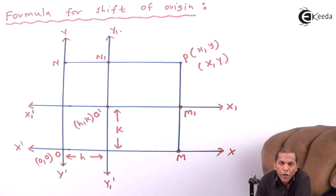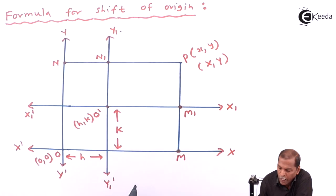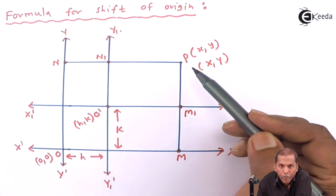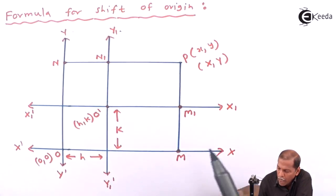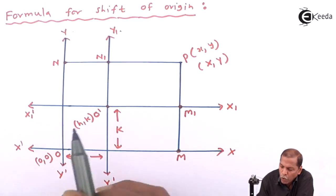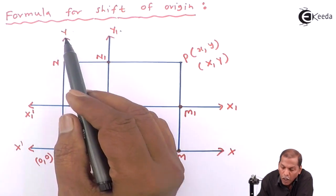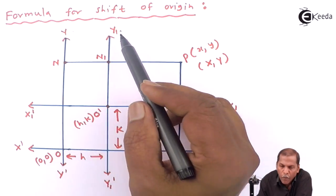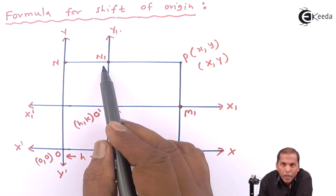Then through point P we draw perpendicular PM which is meeting x₁ at point M and the x-axis at point M. Similarly, through point P we draw perpendiculars to the y-axis meeting it at point N and to the y₁-axis meeting it at point N₁.